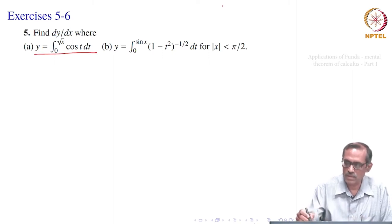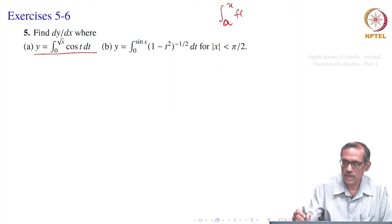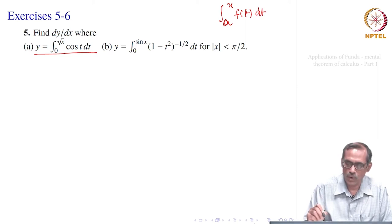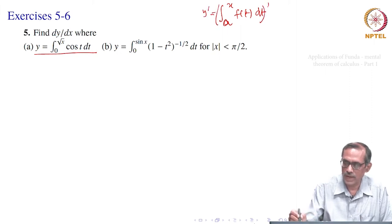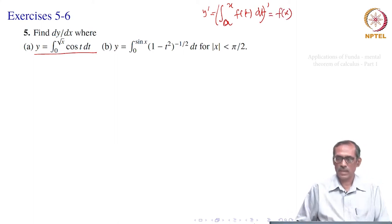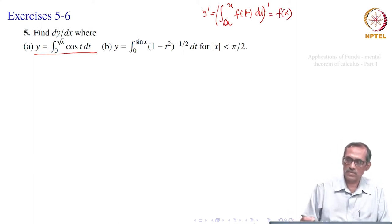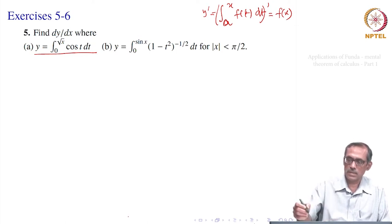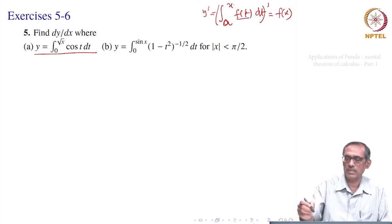Our fundamental theorem says that for integral from a to x of f(t) dt, if you take this as function y, then dy by dx — that is y prime — will be equal to f of x, provided this function is continuous and so on. So, what we do? We straightforwardly go for the derivative, that will equal f of x if it is in the form a to x.